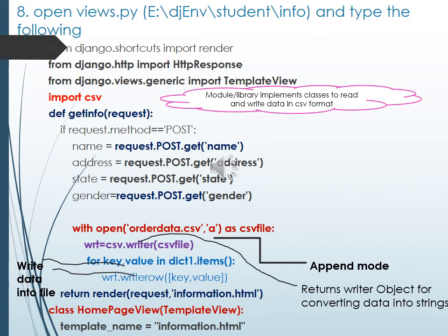The csv.writer() returns an object which is used to convert the data into string format. The dictionary already holds the values with keys and values. The items() function returns the data in key-value format, stored in the respective variables key and value. The writerow() function stores the data in the orderdata.csv file in row format, with key and value stored. The home page view is a class name used to load the HTML file initially.